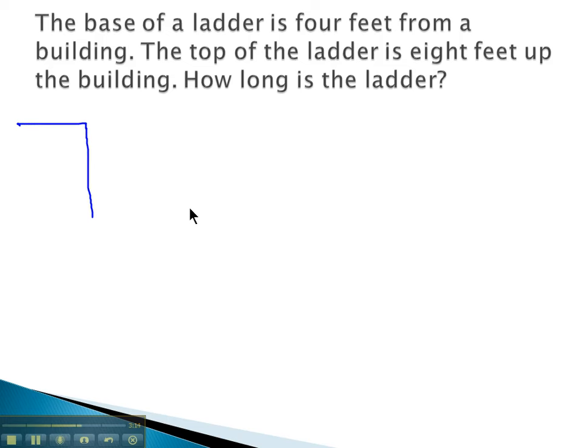Let's draw a picture to see what's going on. Here's my building, and I have a ladder leaning up against it. We said the base of the ladder is 4 feet from the building. So from the base of the ladder to the building, that's 4 feet. And the top of the ladder is 8 feet up. So we're going up here, 8 feet.